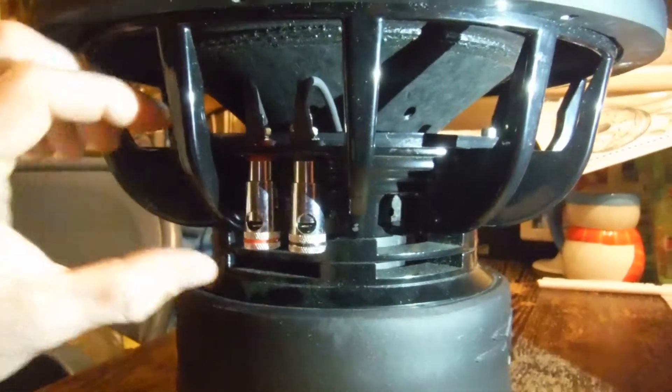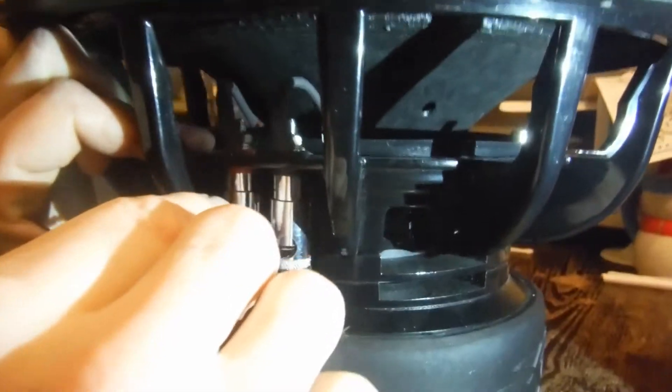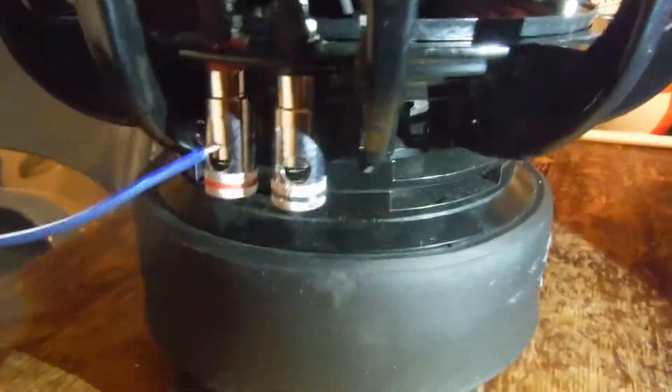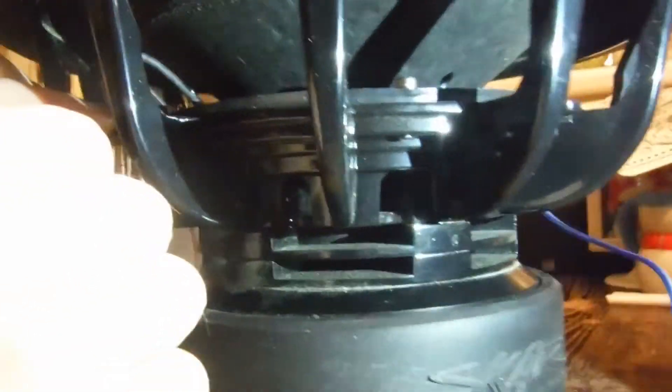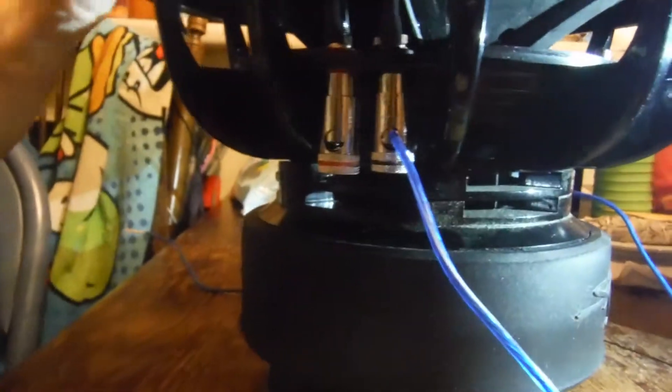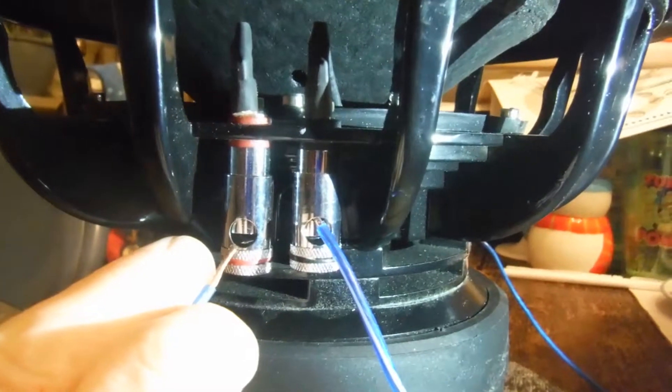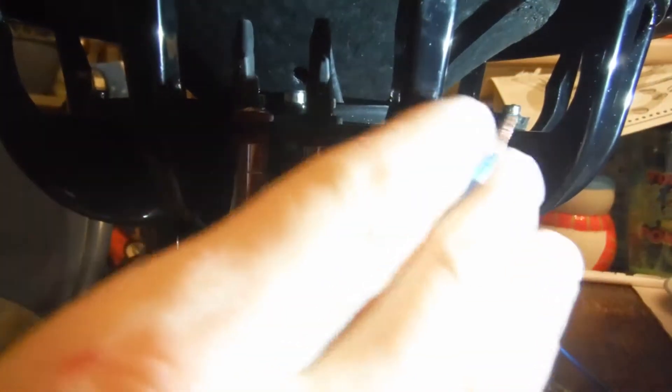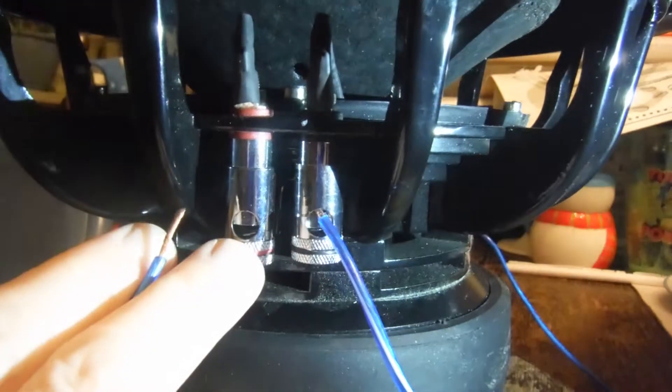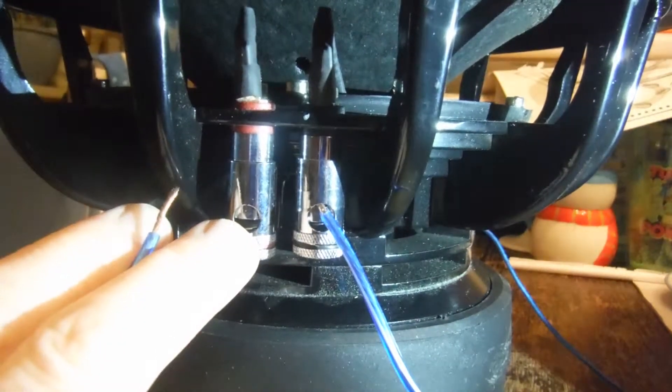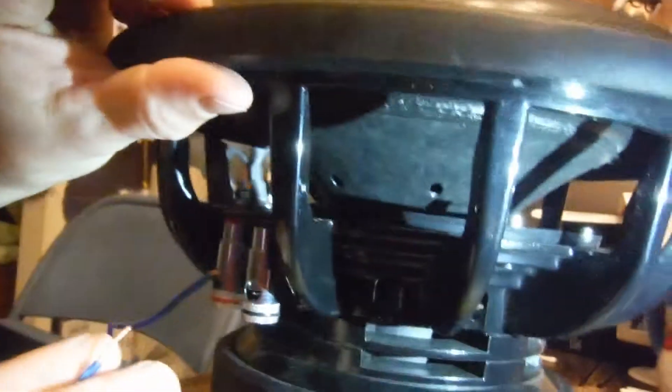First, here we have this voice coil. You're going to go from positive on this side to negative on this side. Now this terminal right here will go to the positive on your speaker box. This is now wired at 8 ohms. This will go to your positive on your speaker box and your negative on your speaker box. Sorry for that.